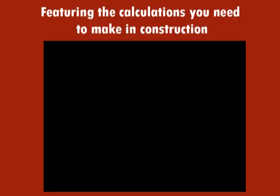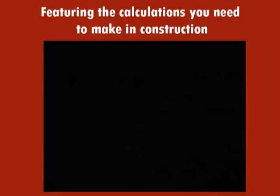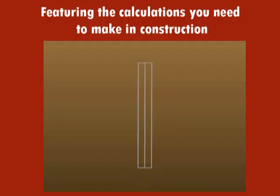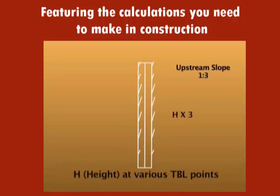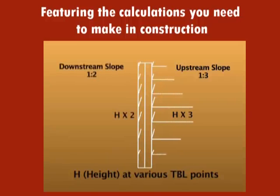After this we mark out the upstream and downstream slopes of the dam. The upstream slope is normally kept at 1 is to 3 and the downstream slope 1 is to 2. In this way the layout of the dam is completed.